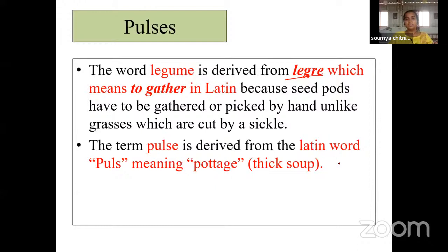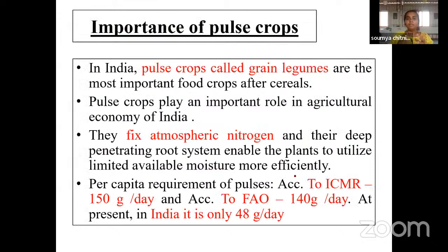The term 'pulse' is derived from a Latin word meaning potage or thick soup. We usually prepare curries — dal — out of most pulses. That's how we can relate to it: a thick soup will be prepared out of it.